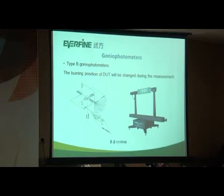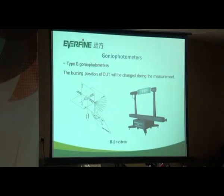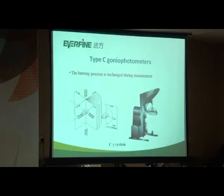This is a product of Type B gonio photometer. The sample will rotate here about this axis, so the burning position of the sample will be changed during measurement. As we know, burning position will influence photometric and colorimetric performance. So now more and more standards recommend using a Type C gonio photometer. For Type C, the sample will be mounted here and rotate around this axis, so the burning position of the sample will be kept unchanged, while the detector will rotate about this axis.